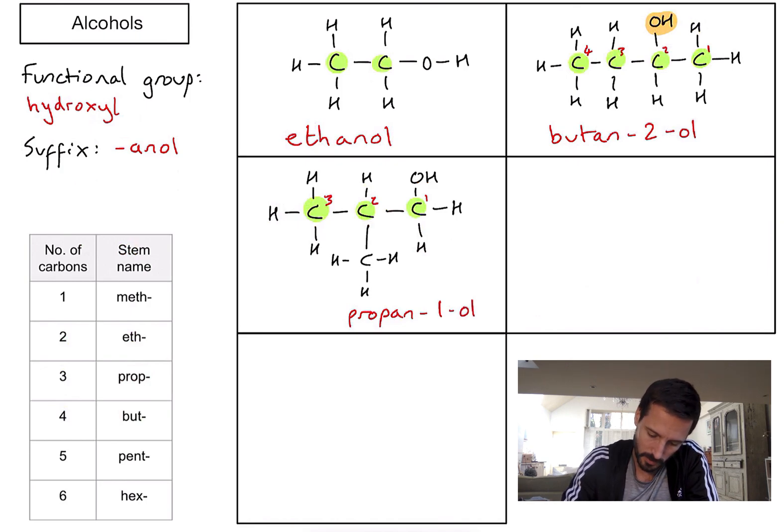However, the extra bit that we need to take into account here is there is a CH3 group or a methyl group sticking off the second carbon. So whenever there's an alkyl group like this methyl group, that's going to go at the front of the name. So I'm going to put 2-methylpropan-1-ol.